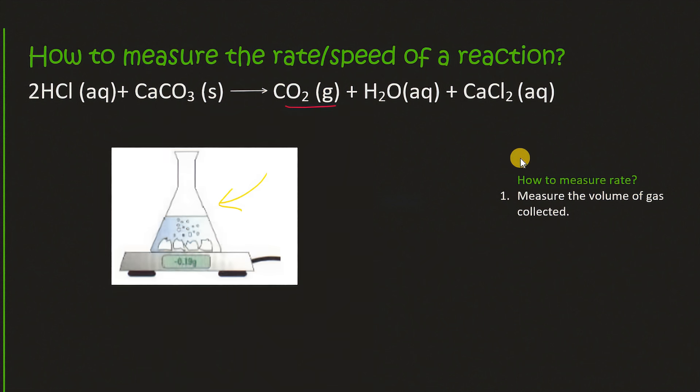And so we can set it up like this where we've got our reaction taking place and then you put that on top of a scale and you can record the value that you see on the scale every 30 seconds for example. And so you can construct a table like this.